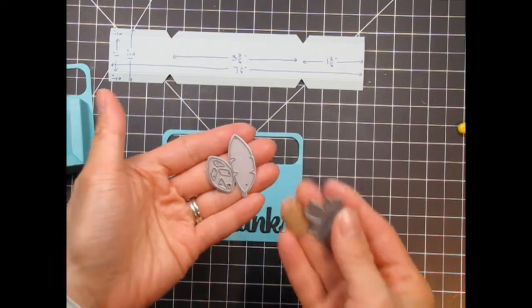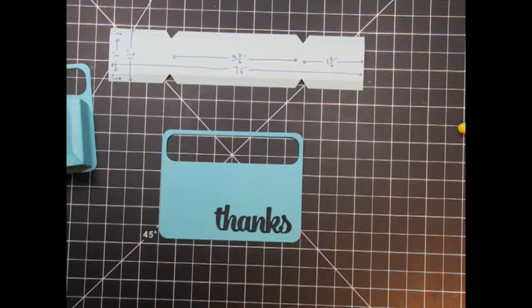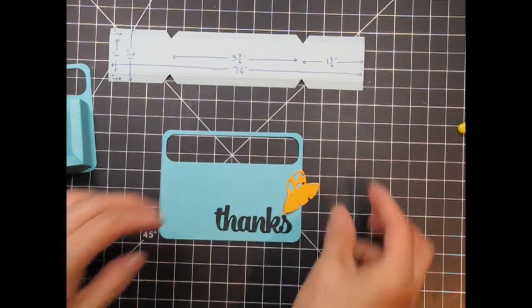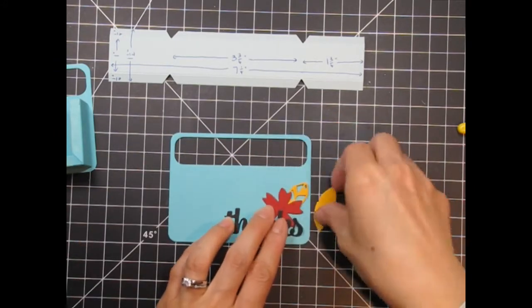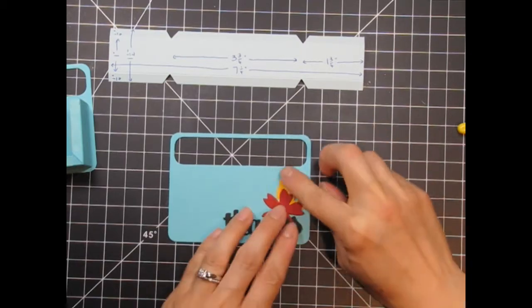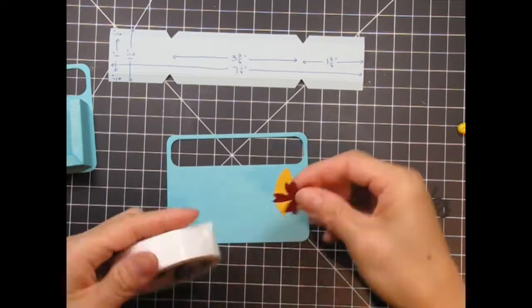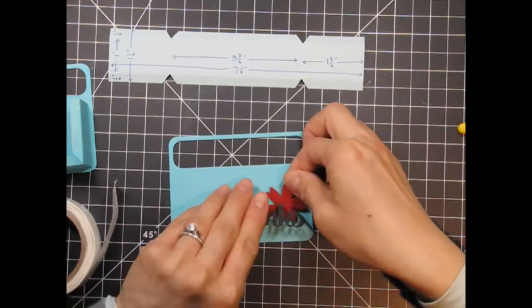Before I adhere the other side of the box, I'm going to embellish it. I've die cut a thanks word using one of the quote tags dies. Next I'm going to die cut a flower and leaves using the flowers dies. I use glue dots to adhere the flowers and leaves, then I use my zig glue pen to adhere the sentiment.